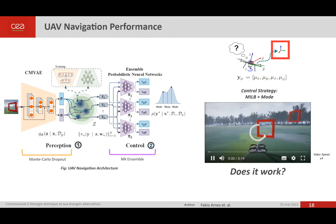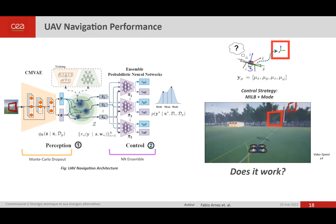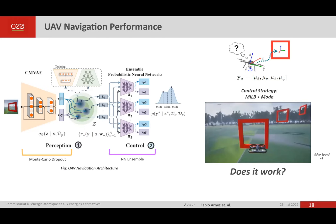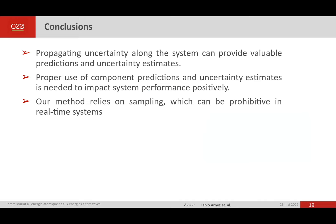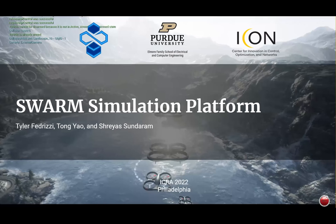To conclude: propagating uncertainty along the system can provide valuable predictions and uncertainty estimates. However, we need to properly use these predictions so that uncertainty estimates positively impact UAV performance. One main drawback of our method is that we rely on sampling, which can be prohibitive in systems with tight time constraints. Thank you.